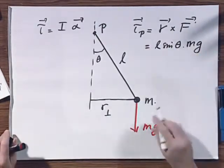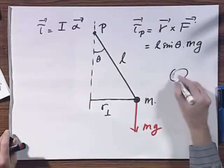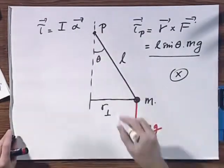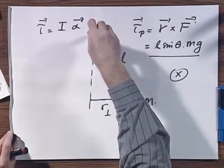It's the cross product. It is in this case in the paper. This is the torque relative to this point P. Think of it as an axis going like this.